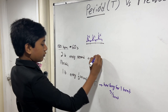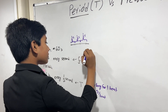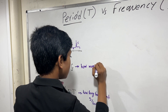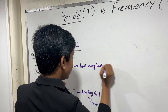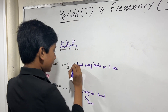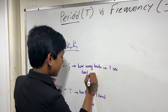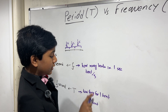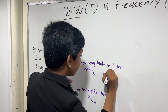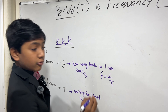And frequency is really how many beats in 1 second — that would be beats per second. Frequency is 1 divided by time, and the reverse.